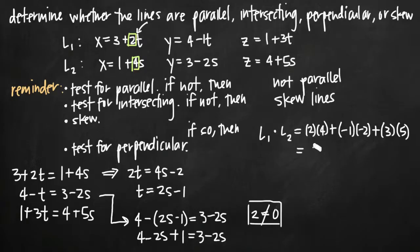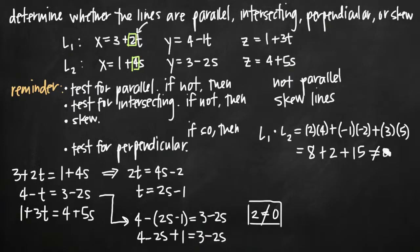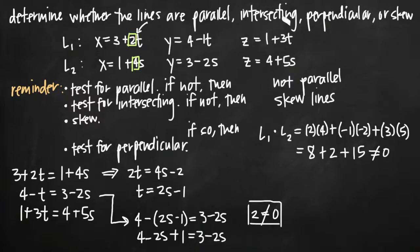Simplifying the dot product: 2 times 4 is 8, negative 1 times negative 2 is positive 2, and 3 times 5 is 15. This gives 8 plus 2 plus 15, which is not equal to 0, meaning the lines are not perpendicular — which of course they wouldn't be, since we already found they're skew. And that's how we determine whether lines are parallel, intersecting, perpendicular, or skew, given parametric equations for both lines.